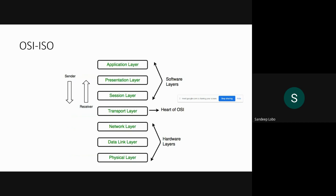In simple terms, the OSI layer is broken into software layers — the top three layers vary depending on the operating system you use. Then you have the Transport Layer, which sits between hardware and software. The bottom three are hardware layers, completely managed by the hardware on your device — your Wi-Fi adapter, Ethernet adapter, firewall, Wi-Fi router, or a switch. The most common type you get is the layer one switch, which is the physical layer switch.